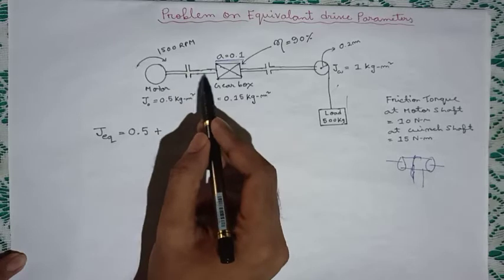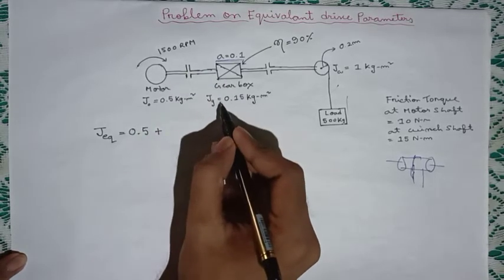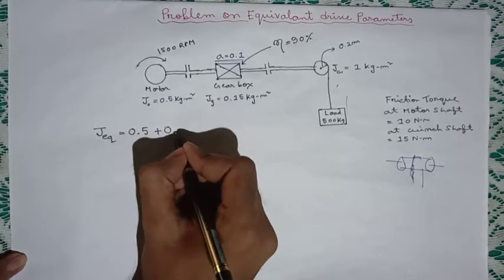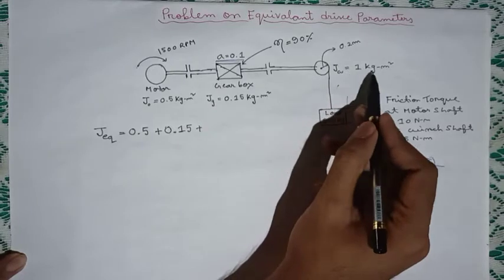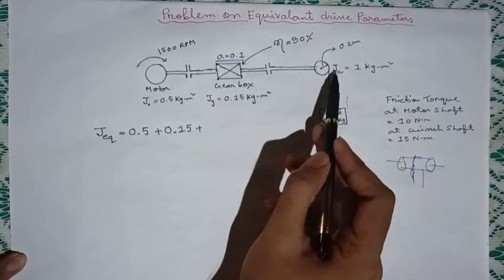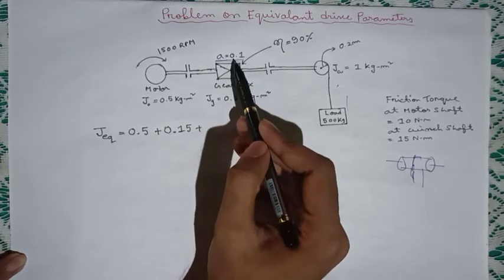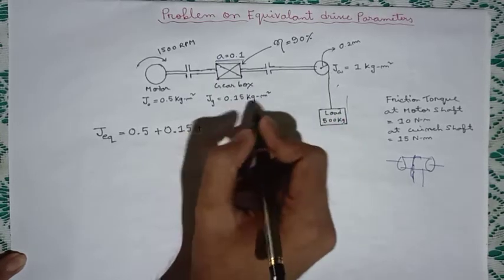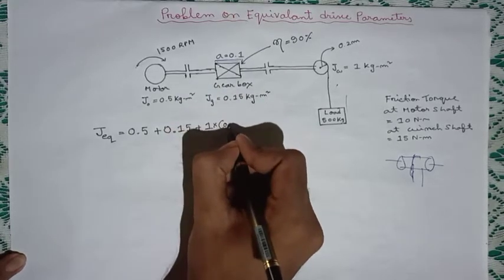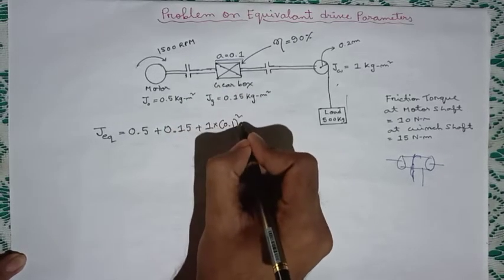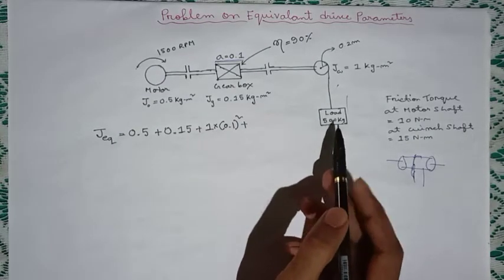Here you can see that the gearbox is directly connected to the motor shaft. There is no gear in between this gearbox and the motor, so we have to write this 0.15 directly without using the gear ratio. Now for this moment of inertia, you can see that this is connected through gear which is a tooth ratio of 0.1, so we have to write 1 into a square, that is 0.1 square.